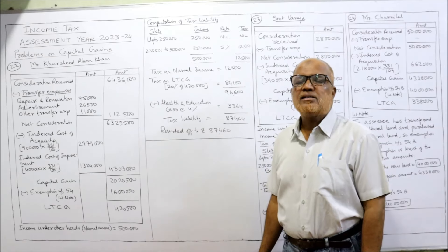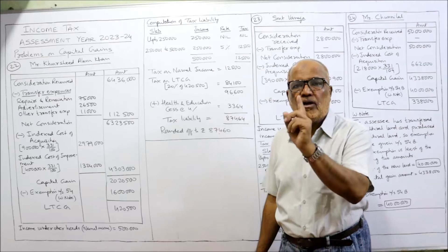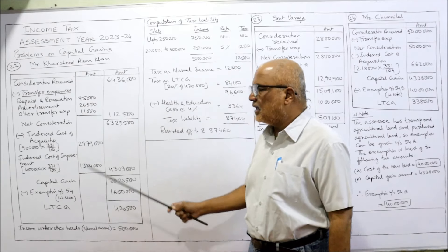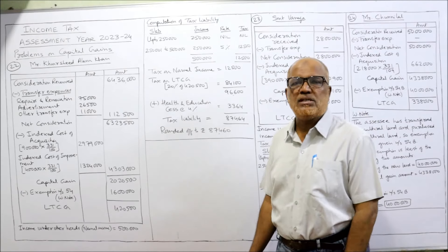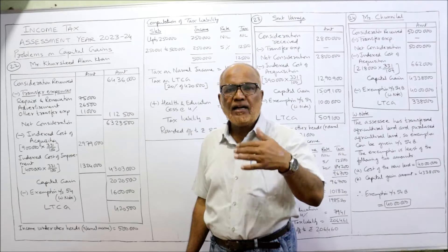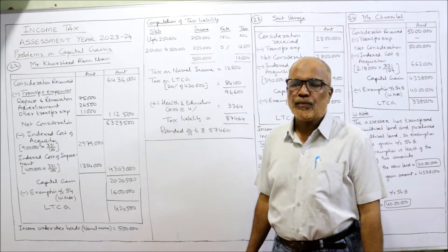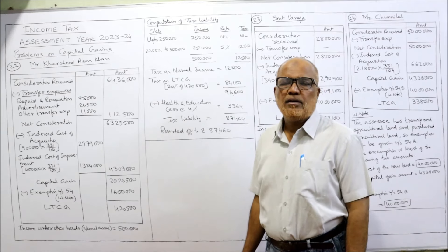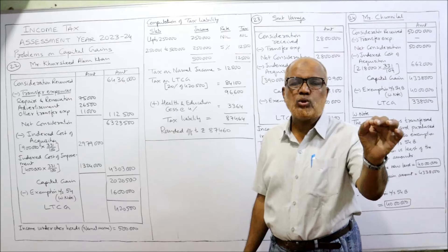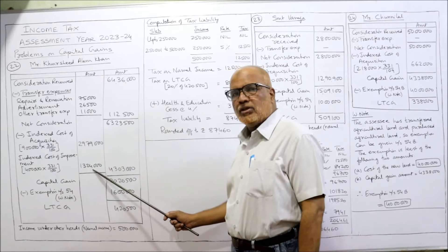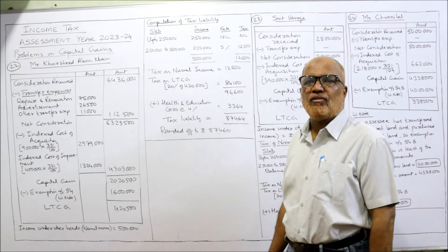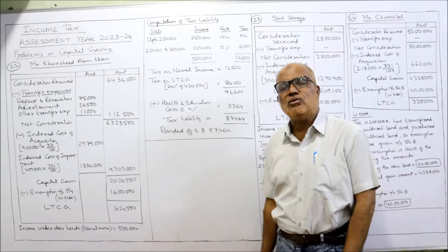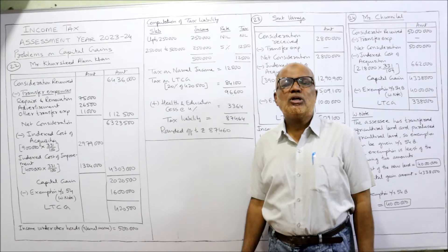Stamp duty value Rs. 9,00,000 multiplied by 331 (the CII for 2022-23) divided by 100 (index on 1-4-2001) gives indexed cost of acquisition Rs. 29,79,000. For indexed cost of improvement: he added a floor in 2001-2002 spending Rs. 4,00,000, so Rs. 4,00,000 × 331 ÷ 100 = Rs. 13,24,000. Total indexed cost of acquisition plus improvement is Rs. 43,03,000. Deducting this gives capital gain of Rs. 20,20,500.